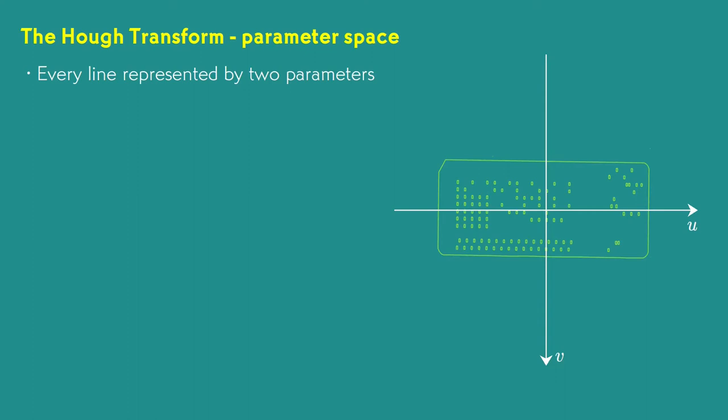In the parameter space that the Hough Line Transform uses, every line in the plane can be represented with two parameters, with each pair of parameters representing a unique line. The first of these is the angle that the line makes with one of the axes. I'll use the horizontal axis here. This angle will vary from zero to pi. A given value of the angle theta selects a particular pencil of parallel lines.